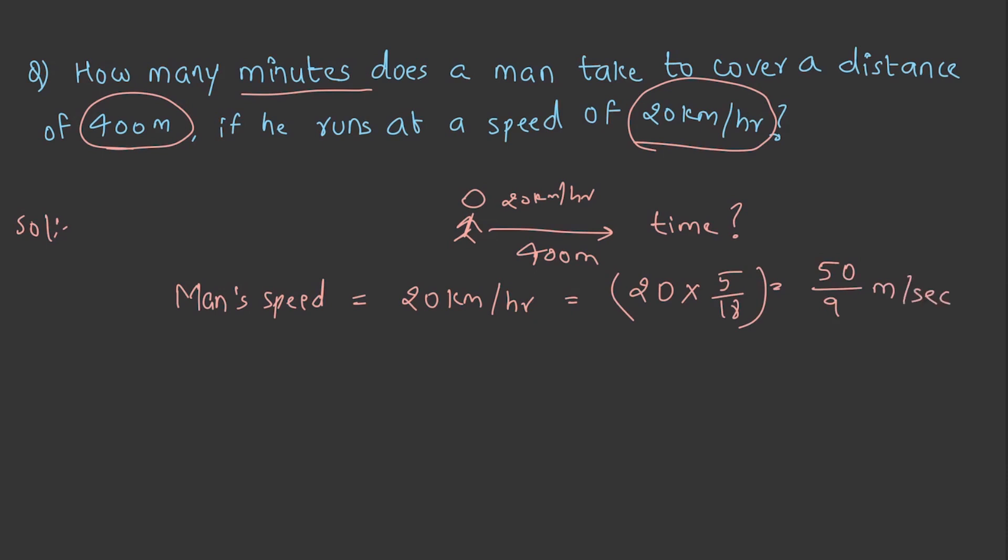Now time taken. How can we calculate the time taken? We already know the formula. Time is equal to distance by speed. And therefore, it is 400 into 9 by 50, and its units are seconds. That is equal to 72 seconds. And when converted into minutes, we get it as 1 and 1 by 5 minutes.